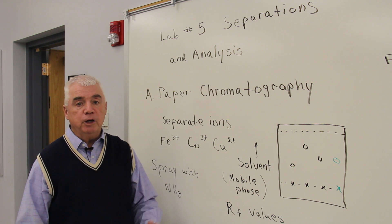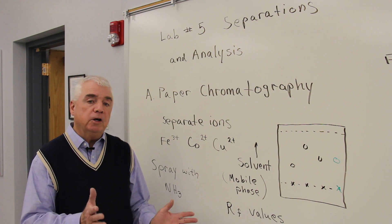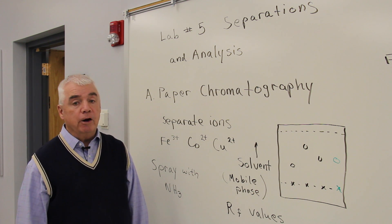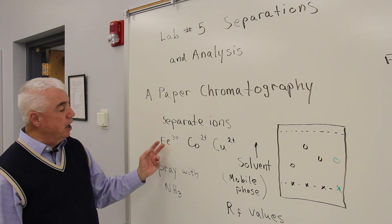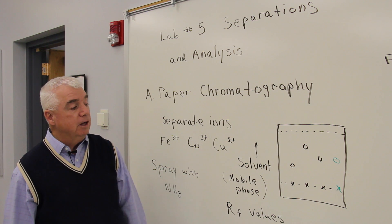Paper that we use in paper chromatography is a little thicker, a little more absorbent than ordinary paper. And in this case, we'll be separating ions: iron, cobalt, and copper ions.